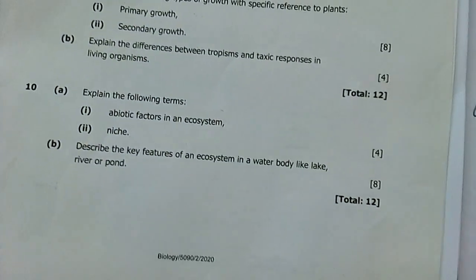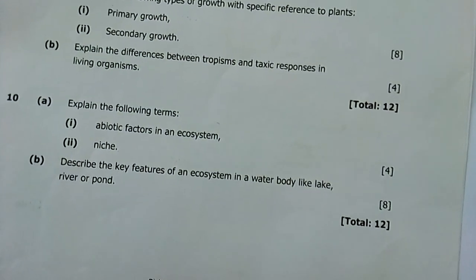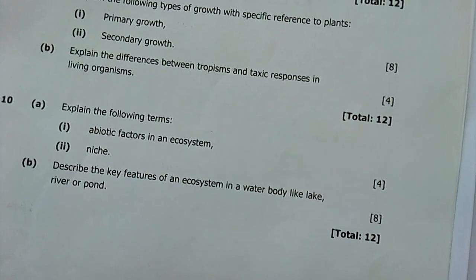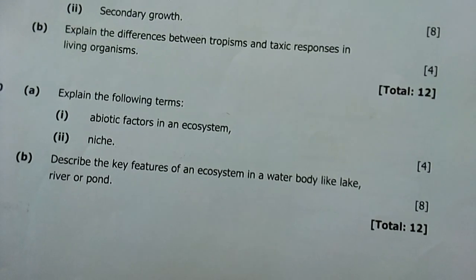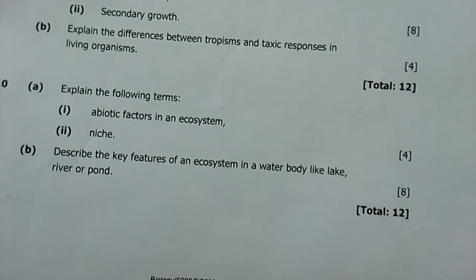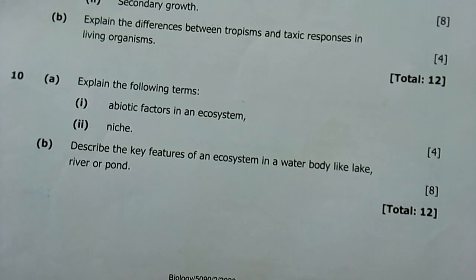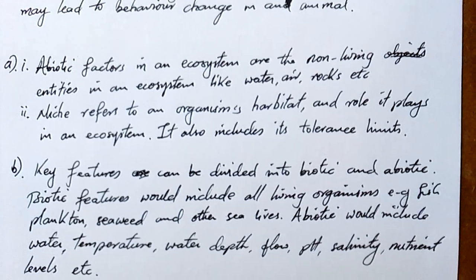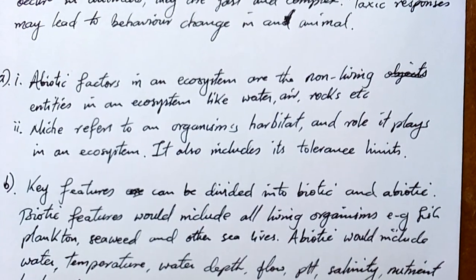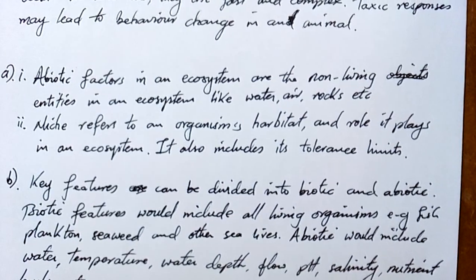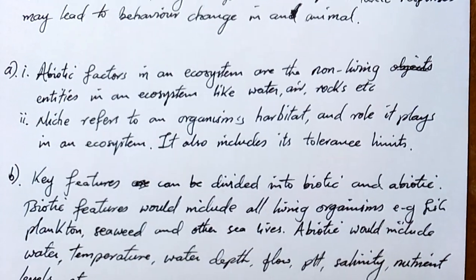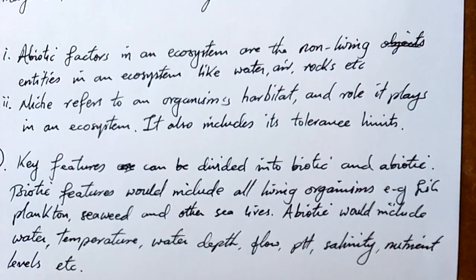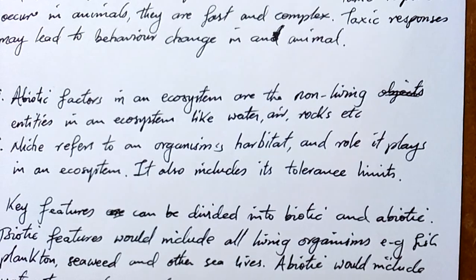Question 10: explain the following terms. Abiotic factors in an ecosystem are the non-living entities in an ecosystem, like water, air, rocks, etc. Niche refers to an organism's habitat, the role it plays in an ecosystem, and also includes its tolerance limits.